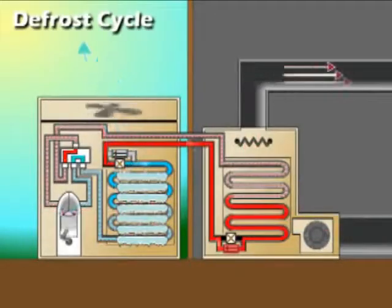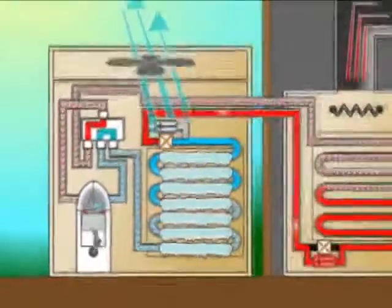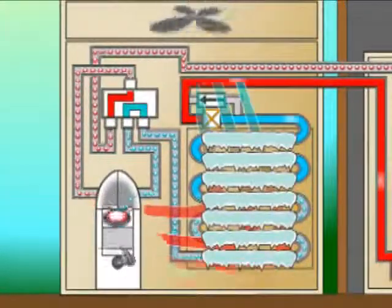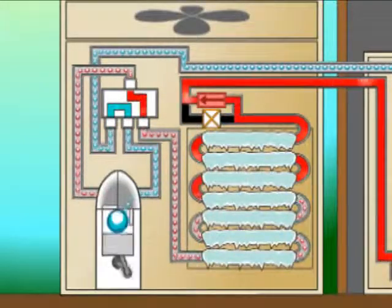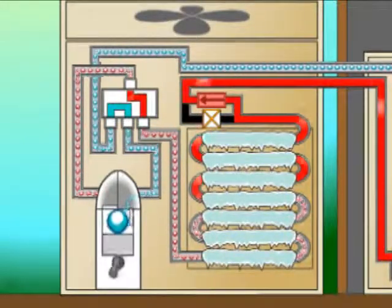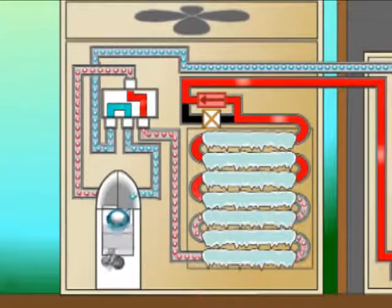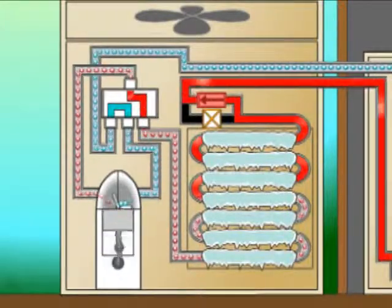As the defrost cycle is initiated, the reversing valve switches the refrigerant path back to that of the summer mode. This allows indoor heat to be transferred from the inside air stream to the outside coil, thereby melting the accumulated frost.